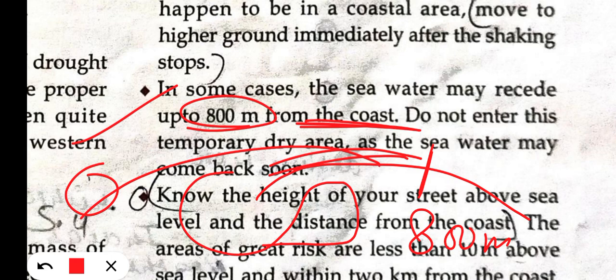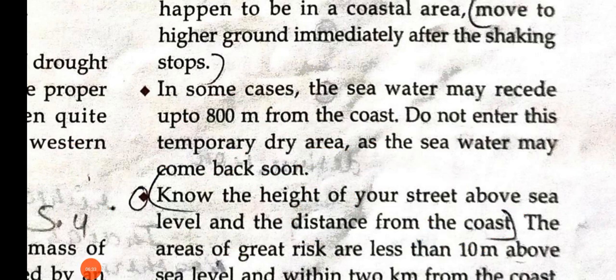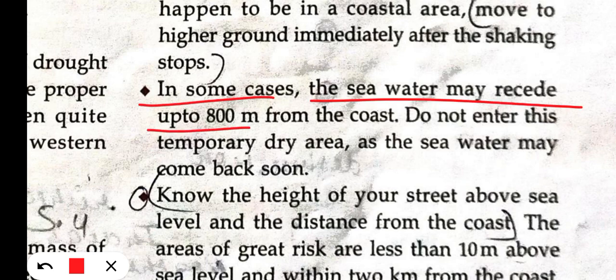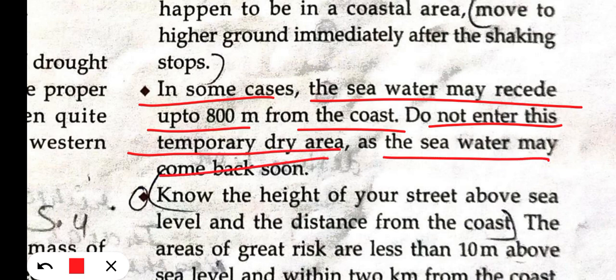Every time the sea water recedes, it will come back. If you don't have time, do not go to the dry area the water has left. Do not enter that temporary dry area, because the sea water will come back. This is your warning — do not go toward the receded water.